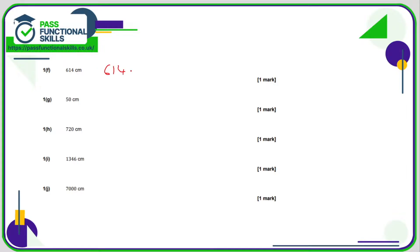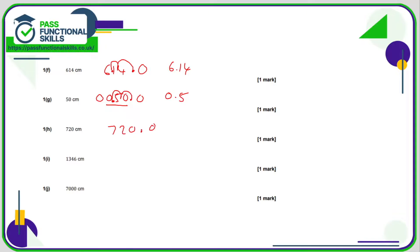614 is 614.0 divided by 100, giving 6.14. 50 is 50.0 — put some zeros in front and move the decimal point two positions to the left to get 0.5 metres. 720.0 becomes 7.2. 1346.0 becomes 13.46. And this last number has zeros on the end — if you're dividing by 100, just knock off two zeros. Nice and easy: 70 metres.